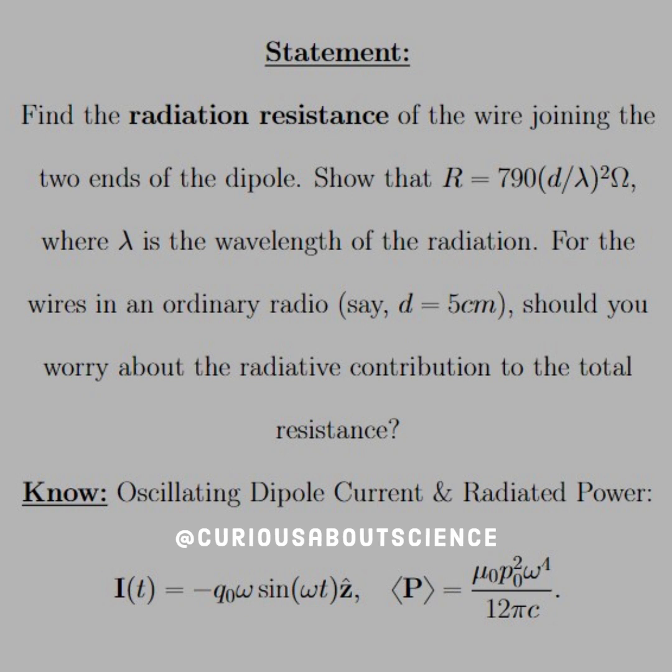And then the power was, this is the average power, of course, per time cycle, which was gained from the Poynting vector, as you recall from Chapter 8.